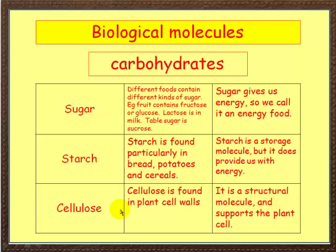Lastly, cellulose. Now cellulose is found in plant cell walls. We don't contain cellulose — we don't have the enzymes to digest it — but it's found in plant cell walls. It's a structural molecule that supports the plant cell and stops it from collapsing. That's carbohydrates.